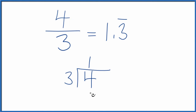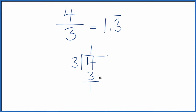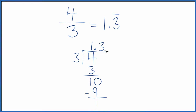One times three is three, with one left over, but three doesn't go into one. So let's call it ten and put a decimal point here. Three times three is nine, with one left over. So three doesn't go into one — we're going to call it ten and move over one here.